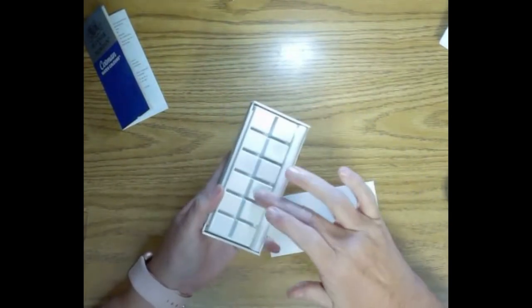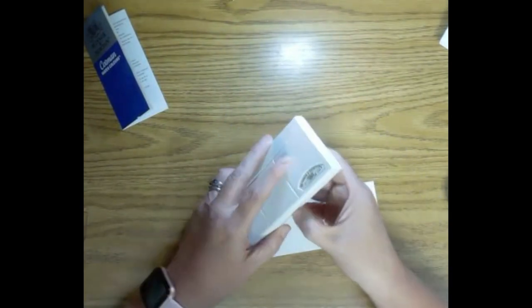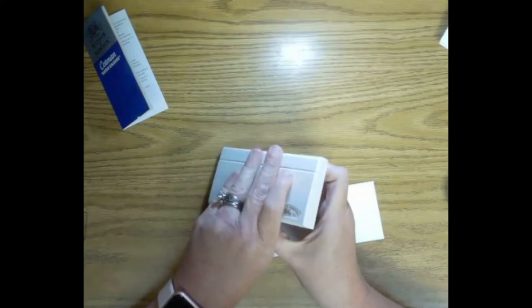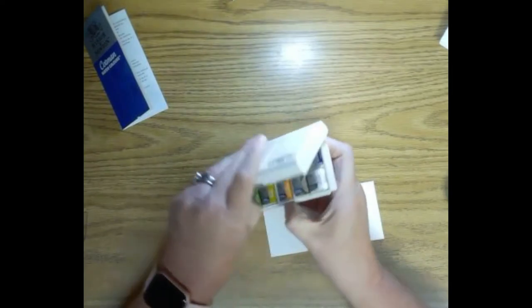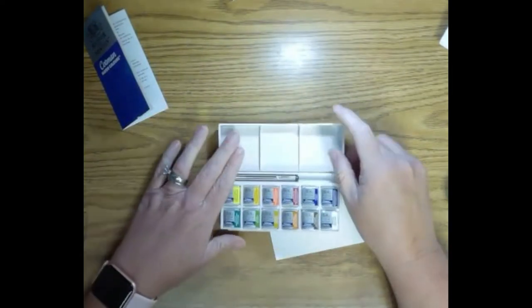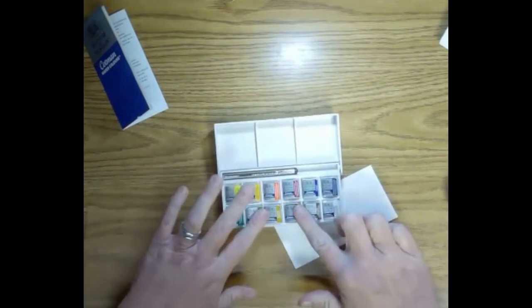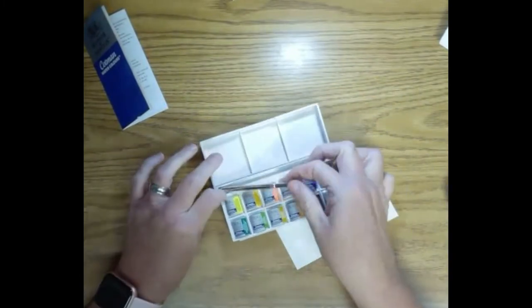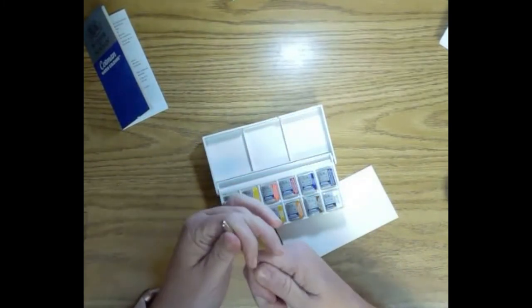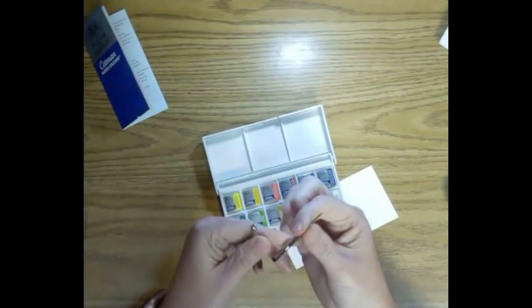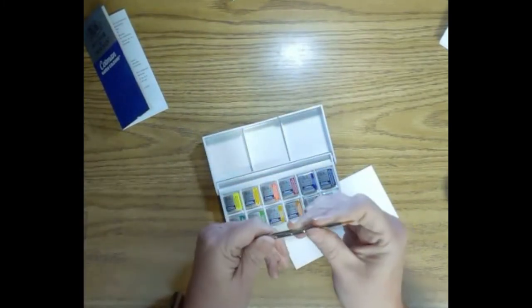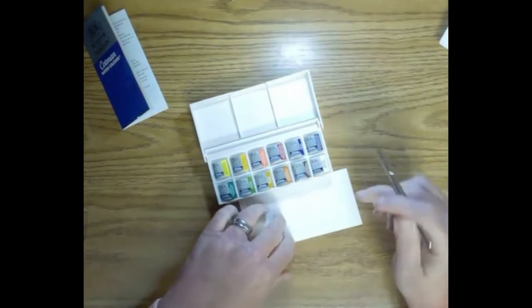And it's got 12 pans in it. Half pans. Open it up. Those are all the colors that we have. We've got a little travel brush. I'm saying this is probably about a two. But we'll try it.